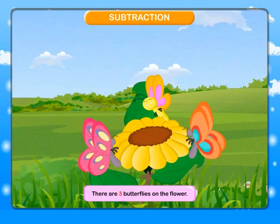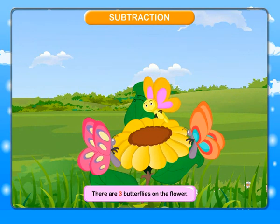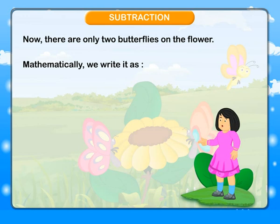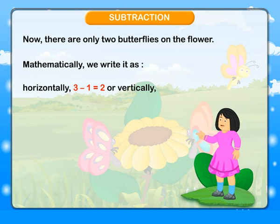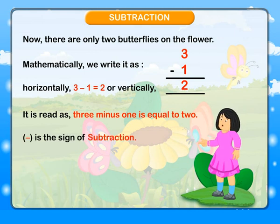Subtraction. There are 3 butterflies on the flower. One butterfly flew away. Now there are only 2 butterflies on the flower. Mathematically we write it as: horizontally, 3 minus 1 is equal to 2; or vertically, 3 minus 1 is equal to 2. Minus is the sign of subtraction.